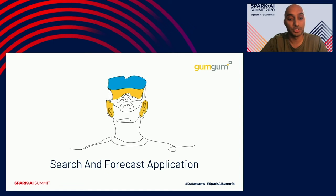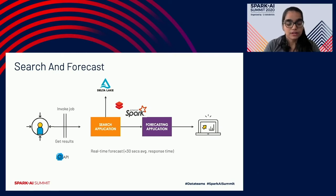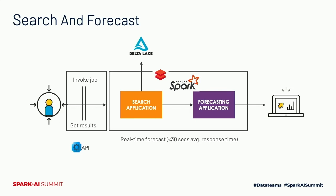Now Rashmina will talk about the search and forecast application. The end-to-end workflow goes from a user submitting a forecast request from the dashboard, through a thin API layer that connects the user to the search and forecast application. This API layer submits the Spark job using the Databricks Jobs API and returns results back to the user. The search and forecast application has two components — the search application and the forecast application — which together must complete within 30 seconds, the SLA we are bound to achieve.